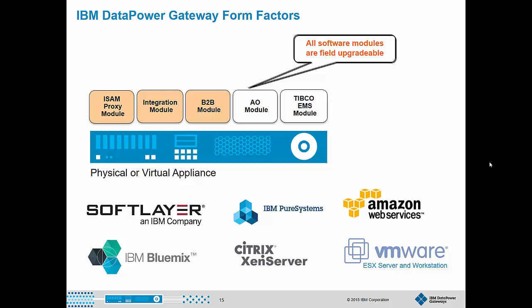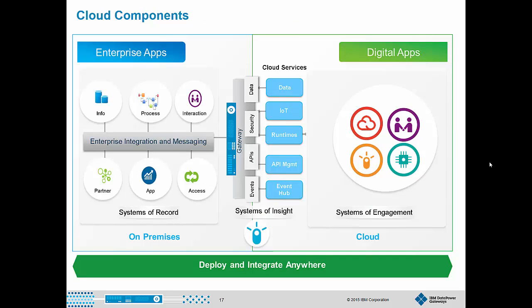Now let's talk about cloud. Before I get into this, I want to briefly distinguish between public, private, and hybrid clouds. At the root of it, all clouds are generally made up of three or four basic parts: the system of record where data is stored, the systems of engagement such as mobile apps, web apps, or the Internet of Things, your services which interact with systems of engagement and access systems of record, and possibly systems of insight to collect data for analytics. The primary difference between these types of clouds is where each part lives.